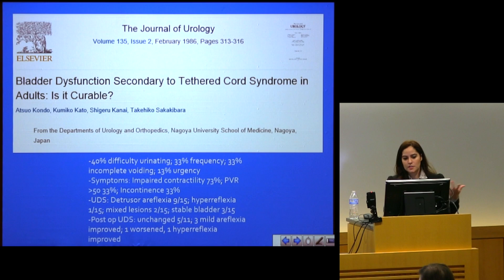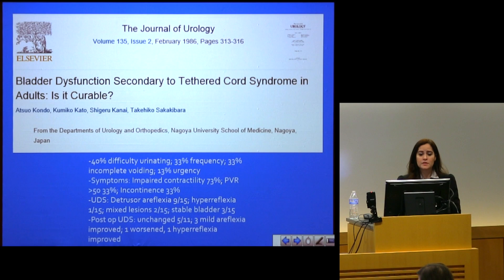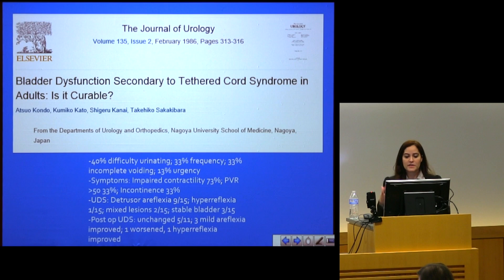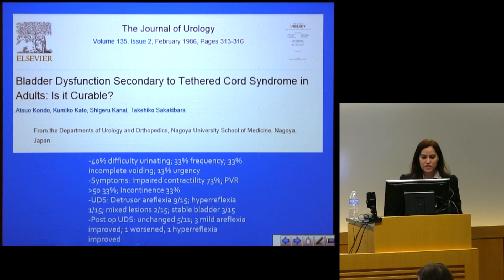Another study of 15 patients, most with urinary tract symptoms, showed on urodynamics: areflexia — a hypocontractile muscle suggesting more urinary retention — as well as detrusor overactivity, some mixed lesions, and 3 out of 15 with a normal study. After detethering, 5 out of 11 were unchanged and 4 had some improvement.